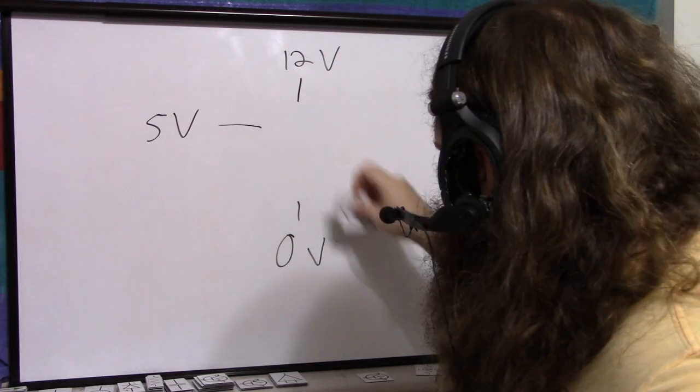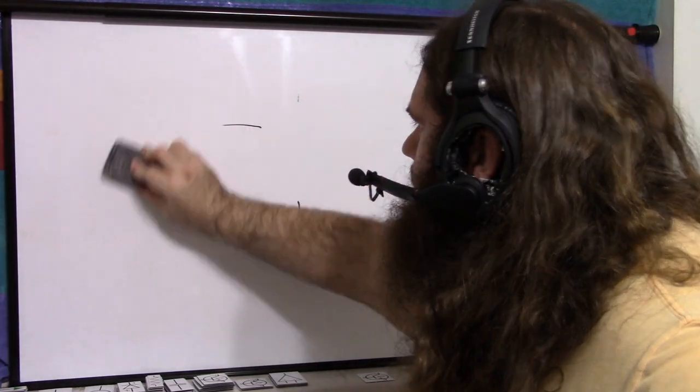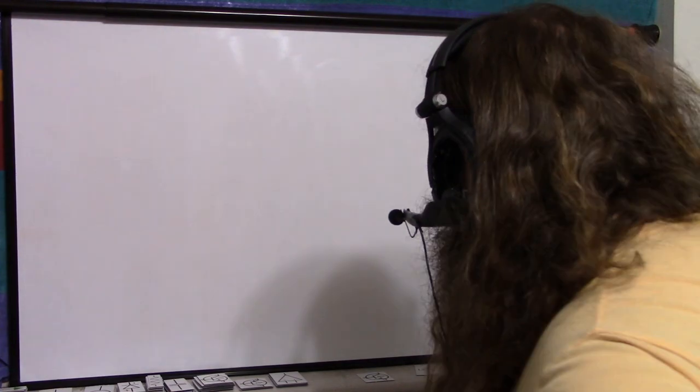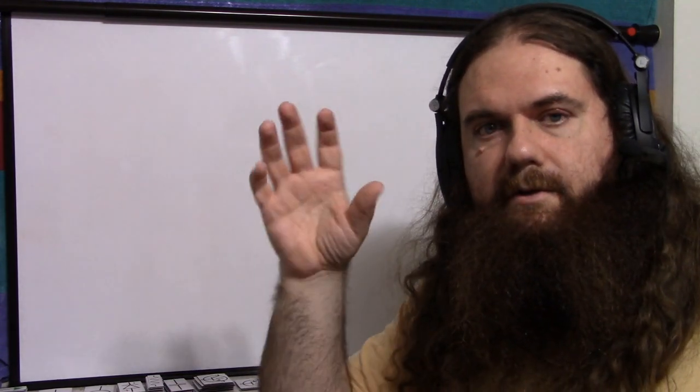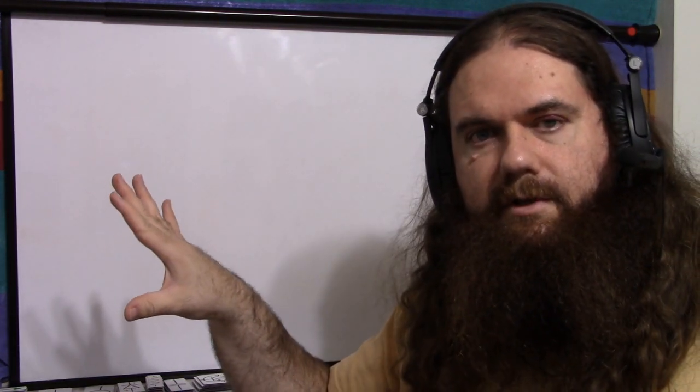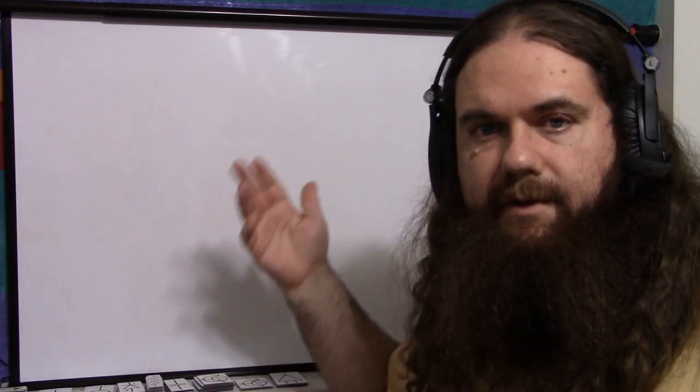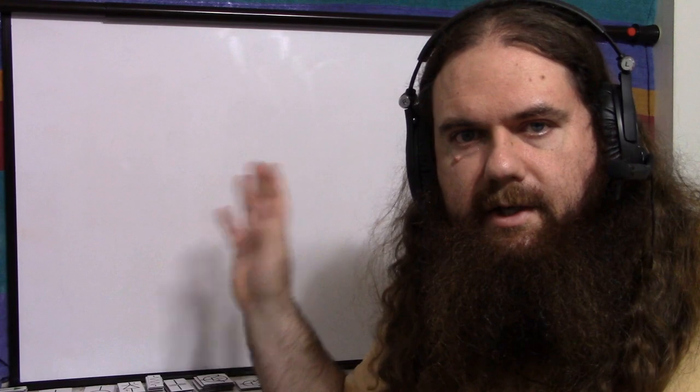When you are actually doing a switch like this, when you're switching a higher load with a lower signal, the most common thing is just to use a second transistor. The first transistor is driven by the lower signal and releases the higher voltage to control the next one. Now the other solution is use a low-side switch, use a relay, opto-isolator, all kinds of other stuff.